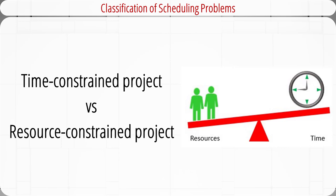Most scheduling methods require the project manager to classify the project as either time-constrained or resource-constrained. A time-constrained project must be completed by an imposed date. Although the time is fixed, the resources can be flexible, and additional resources can be requested to ensure the project meets the schedule.